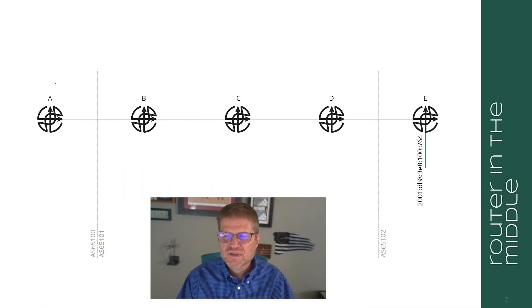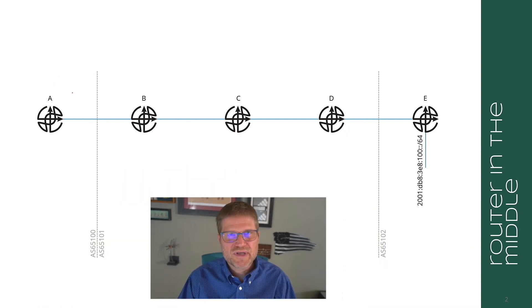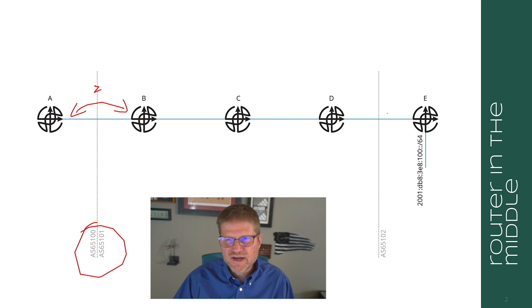If we look at this small network, let's talk about what problem we're trying to solve. A to B is going to be EBGP. You can see that because we have two different AS numbers and this dividing line.